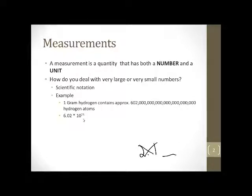Another example, a gold atom has a mass of 0.0000000, all those zeros, 3, 2, 7 grams. So we would write that out as 3.27 times 10 to the negative 22. We'll, of course, do some castle learning, clicker activities of this in class to make sure that everybody can do it.